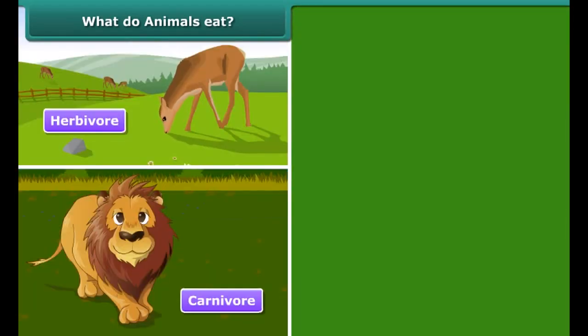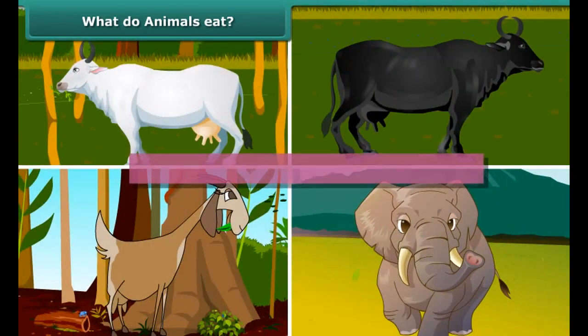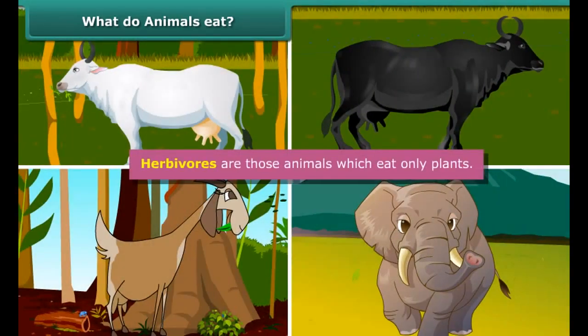While omnivores are those animals which eat both plants and animals — for example, dog, crow.